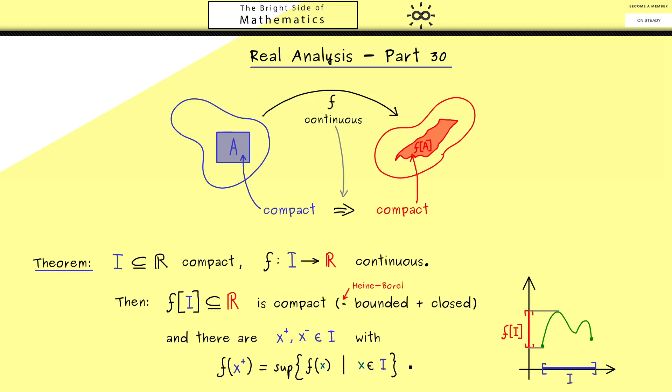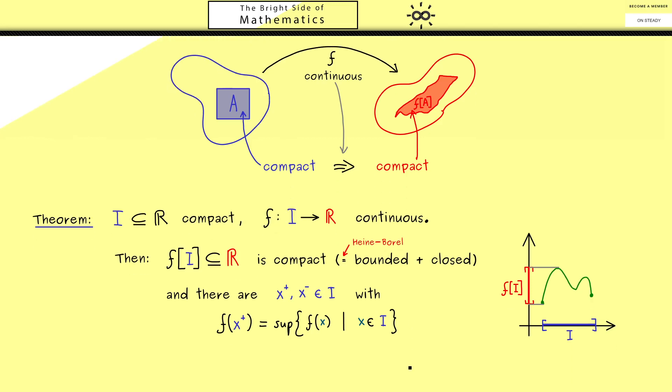With the property that if you put them into the function you get the maximum and the minimum respectively. Of course this property seems natural but in general it's not correct for a non-continuous function. Maybe it's a good exercise for you to find a counterexample. However if we work with a continuous function everything is nice, we have the maximum and the minimum.